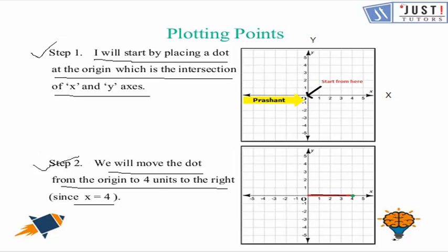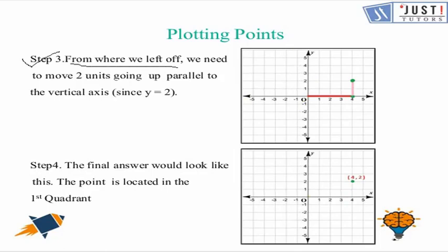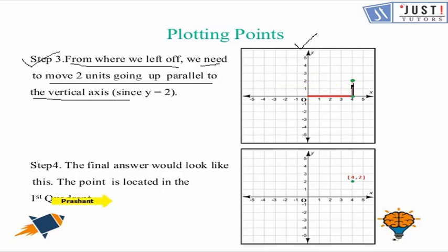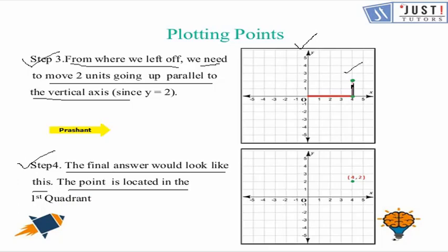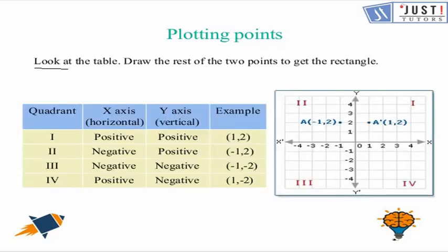Step 3 — from where we left off at 4 units, we will go 2 units parallel to the vertical y-axis. We can imagine a railway track — we go 2 units parallel. Step 4 — the final answer: the coordinate is (4, 2) and the point is located in the first quadrant.